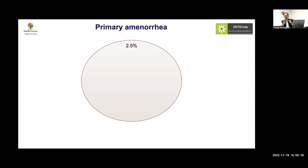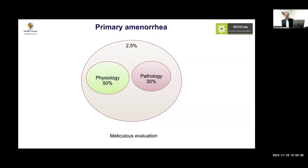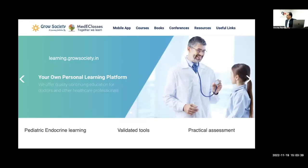The theme today is about primary amenorrhea, particularly due to hypergonadotropic hypogonadism in tall individuals — a narrow but very important group with significant implications. Primary amenorrhea occurs in around 2.5% of cases. Most will be physiological or functional, but there is still a significant number of pathological cases which require meticulous evaluation.